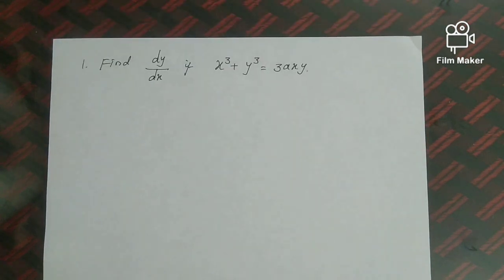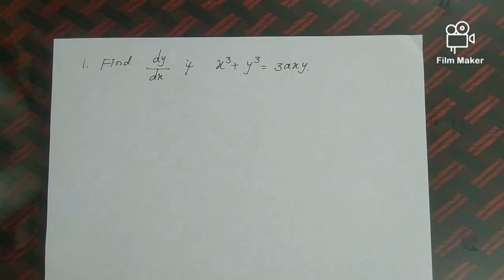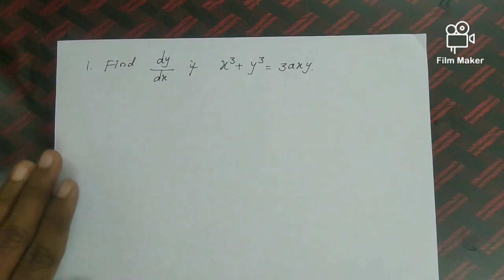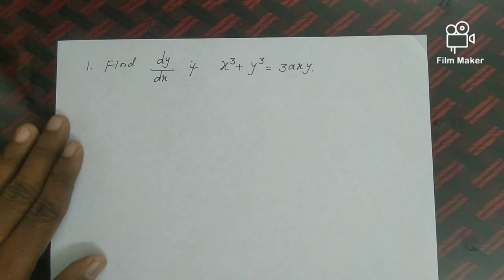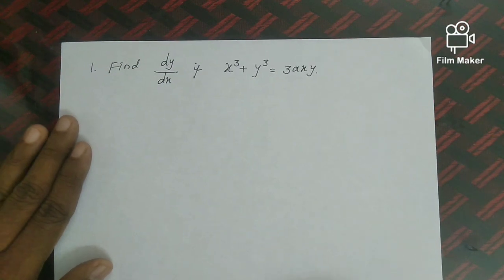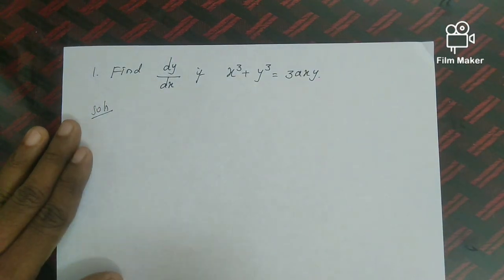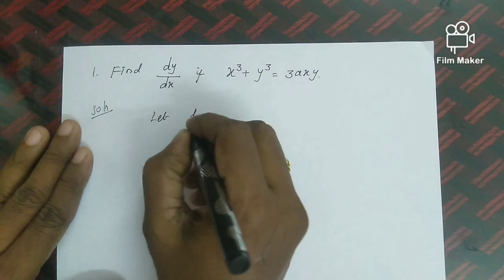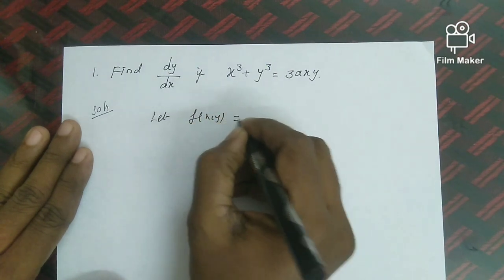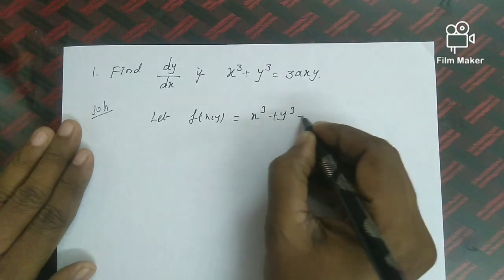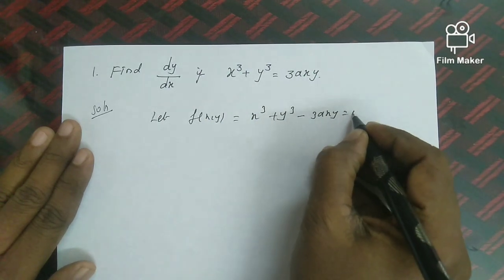First question: Find dy/dx if x³ + y³ = 3axy. Using the formula dy/dx = −(∂f/∂x)/(∂f/∂y), we let f(x, y) = x³ + y³ − 3axy = 0. This is the function we will differentiate partially.